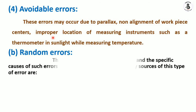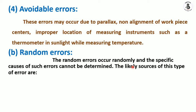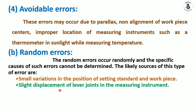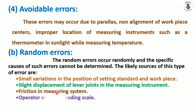Random errors occur randomly, as the name suggests. Their specific causes cannot be determined. Likely sources include small variations in the position of setting standards and workpieces, slight displacement of lever joints in instruments after years of use, friction in measuring systems such as backlash error in micrometer screw threads, and operator error in reading scales.